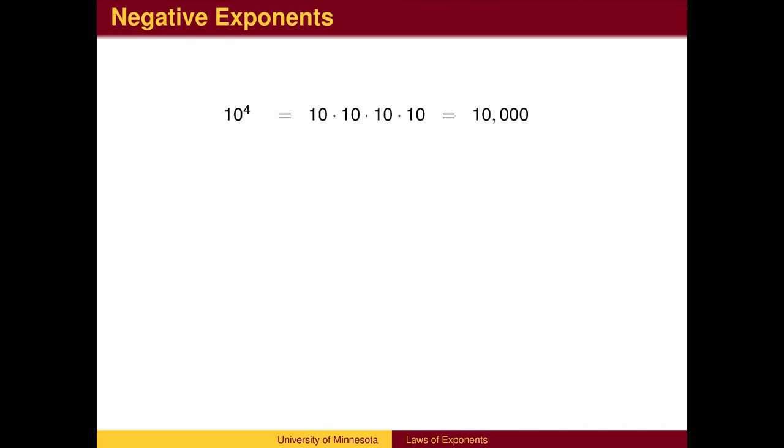If we begin with 10 to the fourth, which is 10,000, and remove one factor of 10 at a time, we are dividing by 10 in each step. 10 to the third is 1,000. 10 squared is 100. 10 to the first is 10.